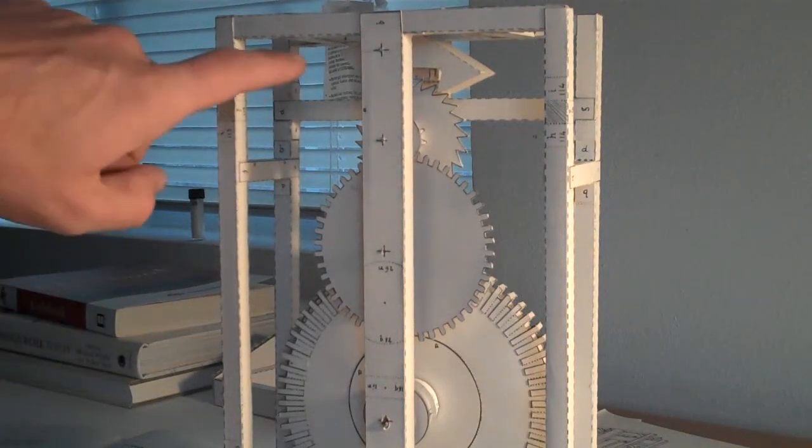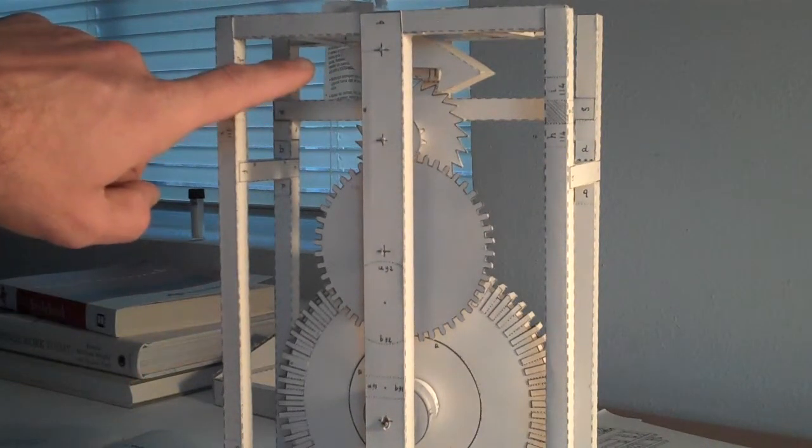Okay, so this up here is called the anchor or the escapement. This is the escapement wheel.